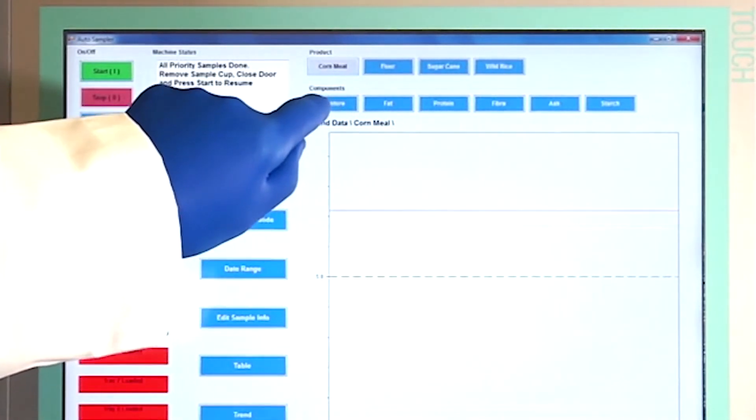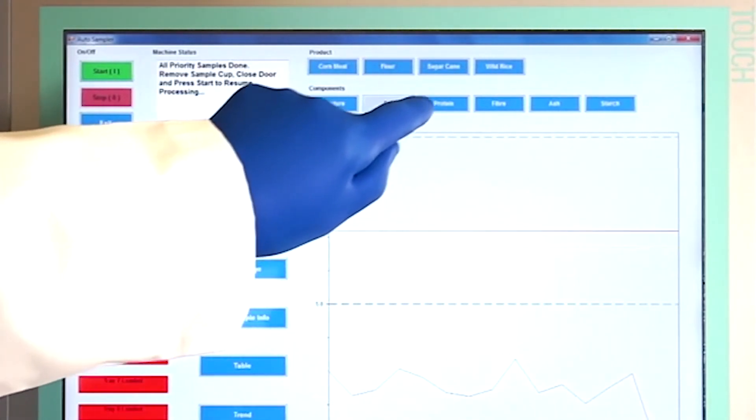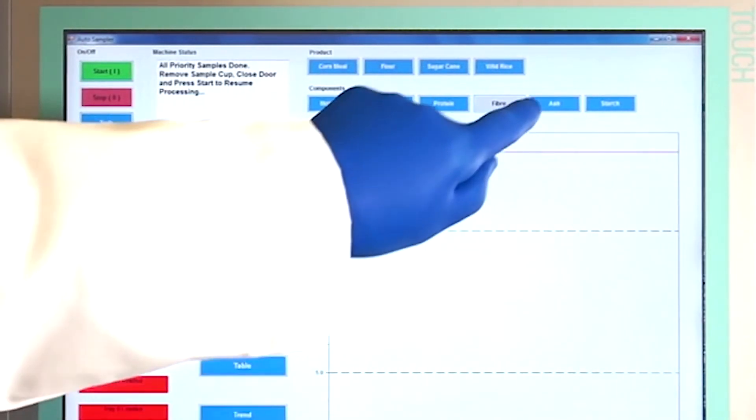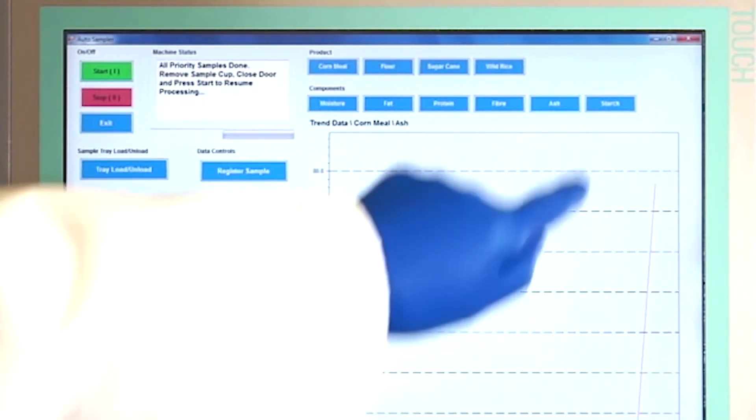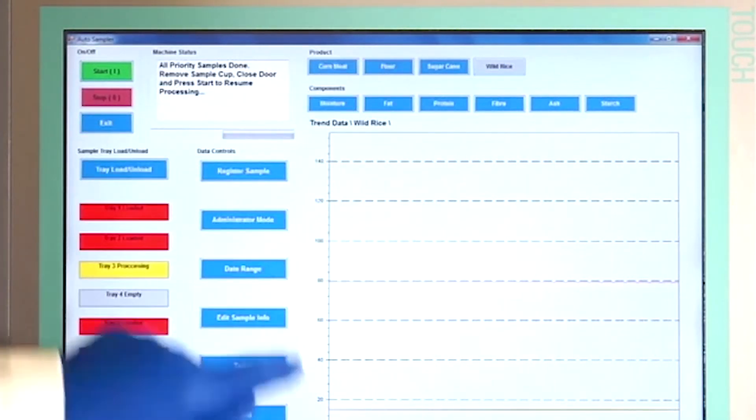NIR Spectra parameters and analysis results are written to an industry standard SQL database, providing easy extraction of analysis results to Excel or a variety of third-party dashboard programs to evaluate quality, consistency and homogeneity of incoming materials and finished products.